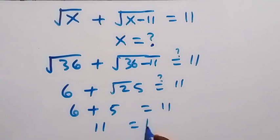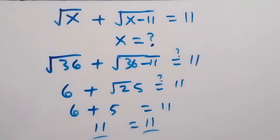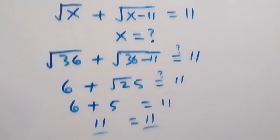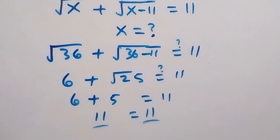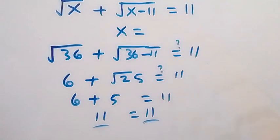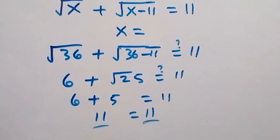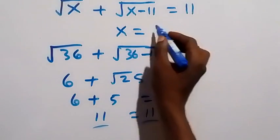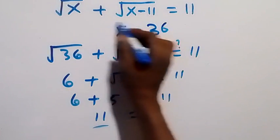Of course, 6 + 5 = 11. The left-hand side equals the right-hand side, so we can conclude that x = 36 satisfies the given equation, and the value of x is 36.